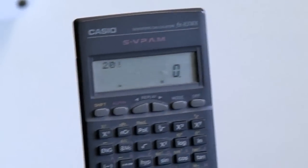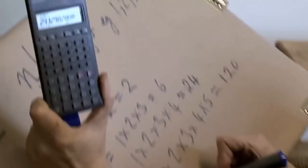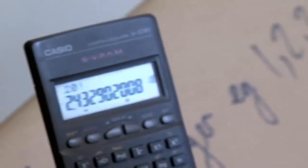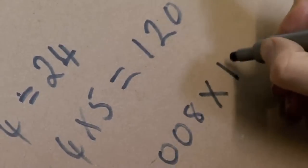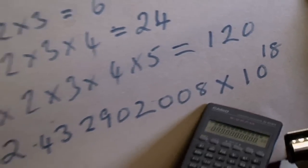20 factorial, all ready to go. So now I put equals and this comes out to be 2.43, 290, 200, 8, and that was the important bit, times 10 to the 18. So this is now a really quite large number.